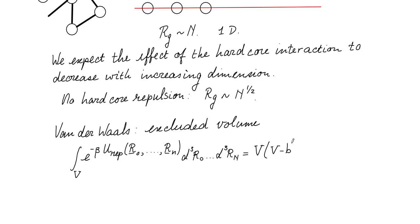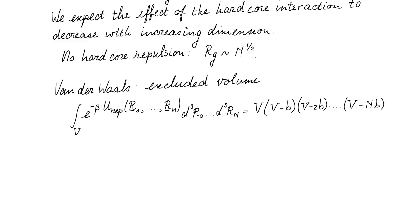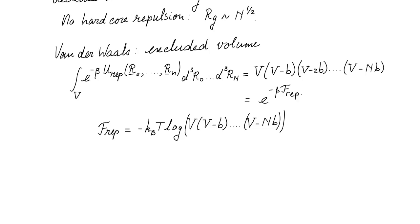For the third one that needs to avoid the first two particles, so we have v minus 2b. And we carry on up to and including v minus nb. This term represents the contribution of the repulsive interaction to the partition function. So we can write this as e to the power minus beta f repulsion, which is the contribution to the free energy of the repulsive interactions.